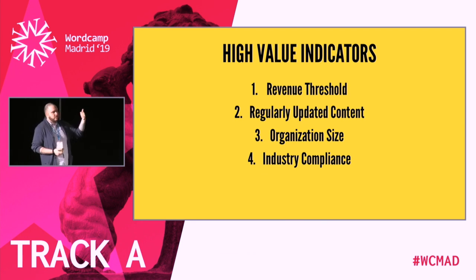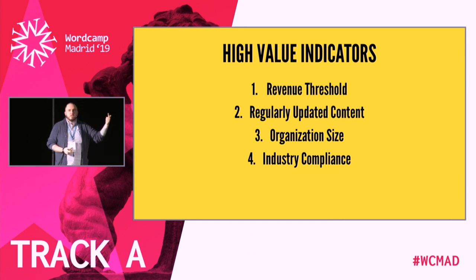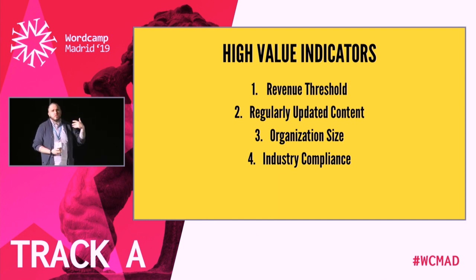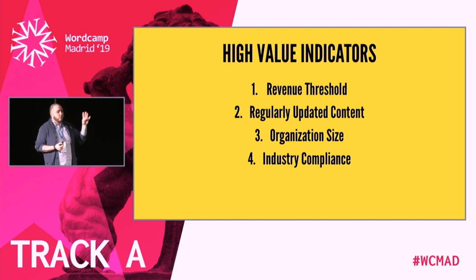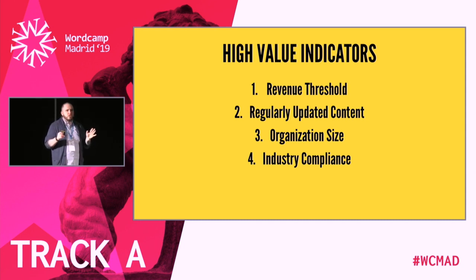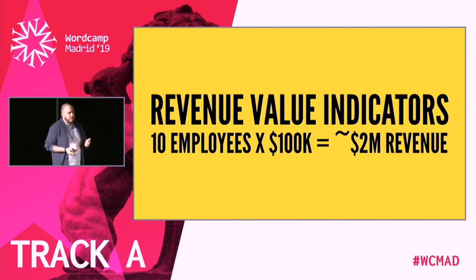Revenue threshold is one indicator. Another is regularly updated content — if someone never posts anything, they're not going to value a CMS. It could be adding products, updating prices, doing sales or promotions. Third is organization size. Fourth — and this is a big one — industry compliance. If you find a niche with some kind of compliance requirement, once that first person realizes they're getting sued, all their friends are getting sued too and they'll call you.